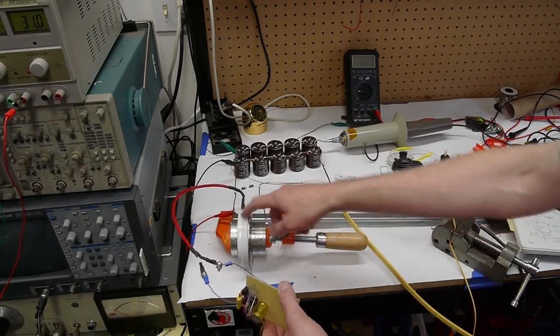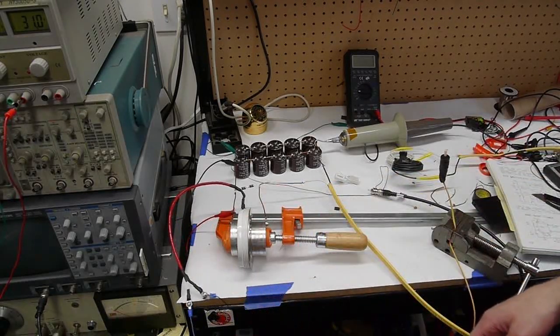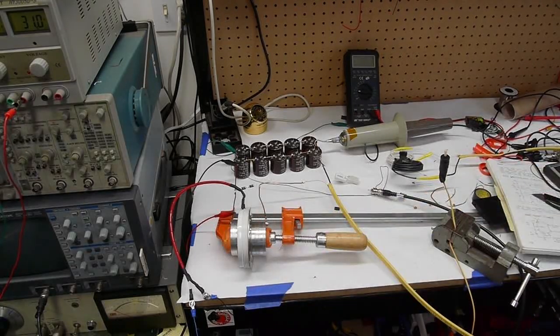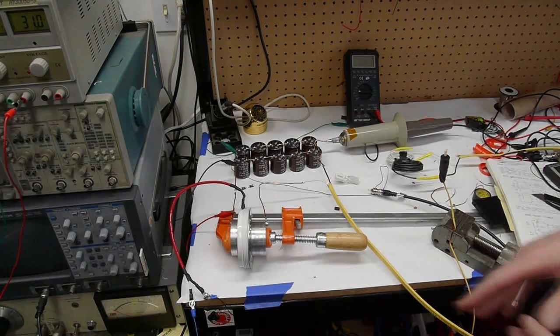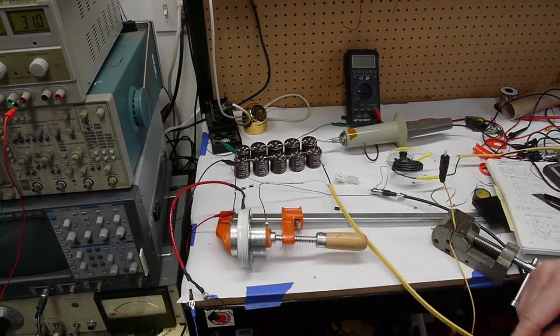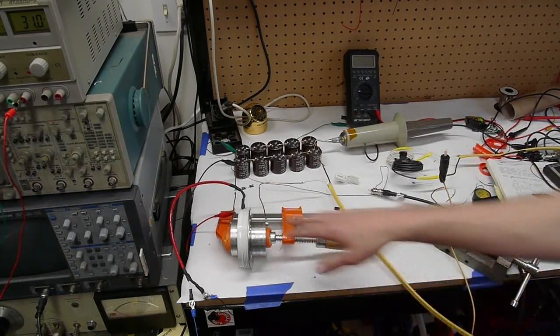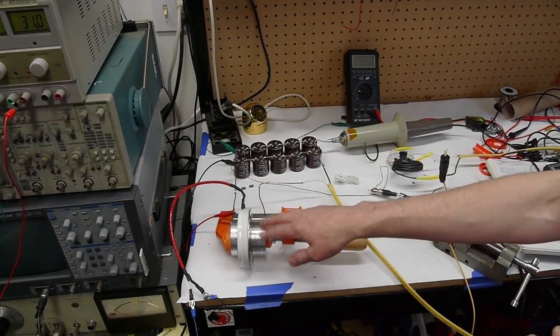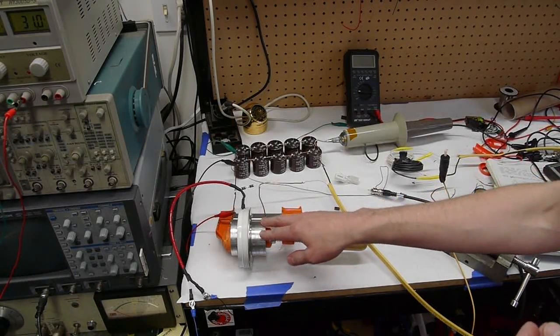So these hockey puck SCRs can handle huge amounts of current. And even better, they can handle huge amounts of rates of change of current. So I'll put a link to the specs on this one up in the video. I think it's rated at 1200 amps and it can block about four and a half kilovolts.